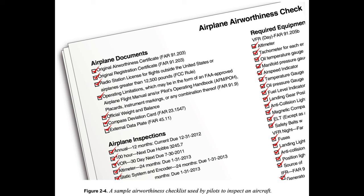The pilot needs to determine that the following documents are, as appropriate, on board, attached, or affixed to the airplane: 1) current Airworthiness Certificate (14 CFR Part 91, Section 91.203); 2) current Registration Certificate (14 CFR Part 91, Section 91.203); 3) Radio Station License for flights outside the United States or airplanes greater than 12,500 pounds (FCC rule).